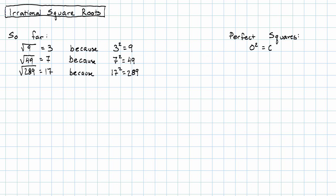0 squared is 0, 1 squared is 1, 2 squared is 4, 3 squared is 9, and so on. But you'll notice, as this list goes on, these numbers just get further and further apart. What about all the numbers in between?